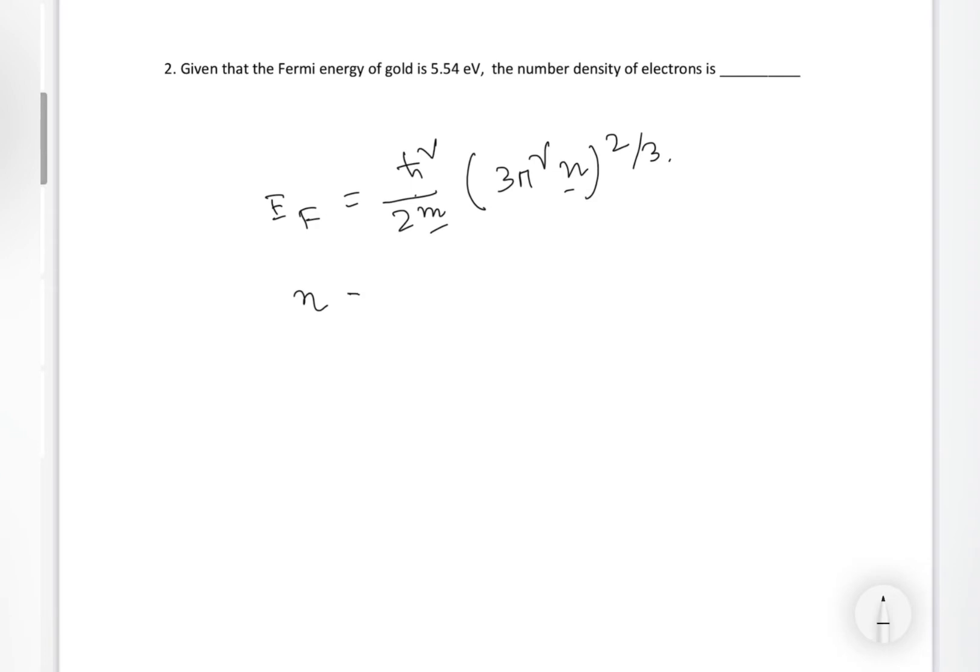If you calculate, then we will come to n = (2m / 3π²h-bar³) × E_F^(3/2). As in my previous videos also, I have said to remember those things. Planck's constant we know is 6.626 × 10^(-34) joules. This is Planck's constant, not reduced Planck's constant. We have to calculate that. Mass of electron is 9.11 × 10^(-31) kg and 1 electron volt is actually 1.6 × 10^(-19) joules.